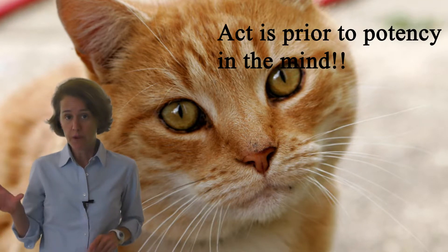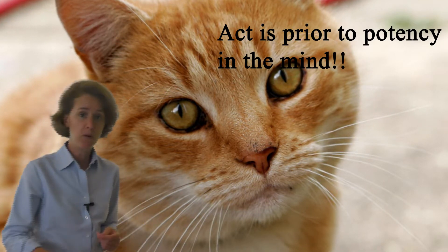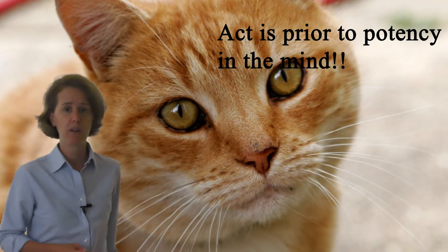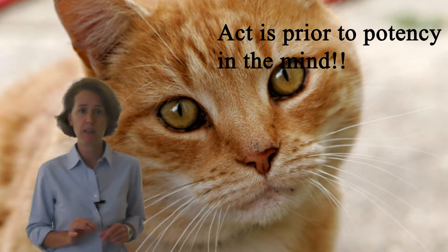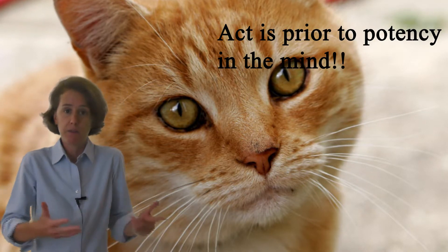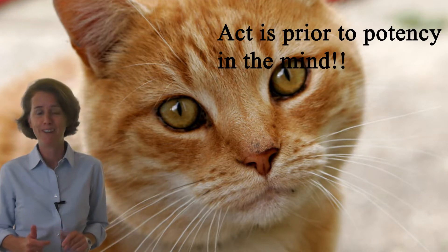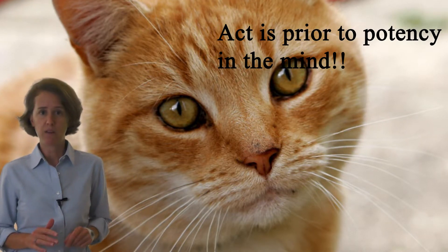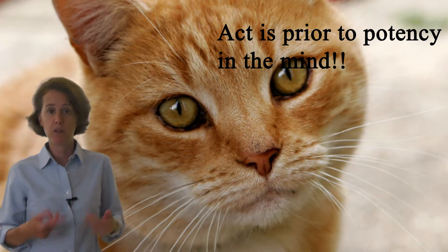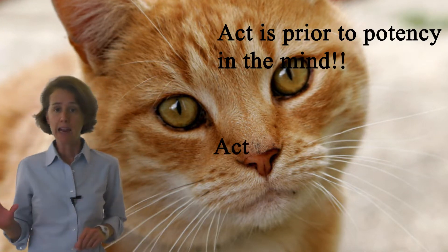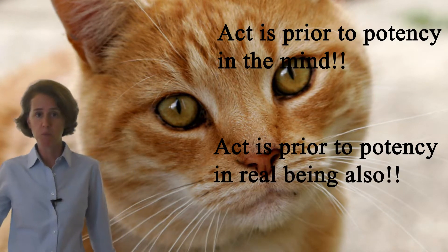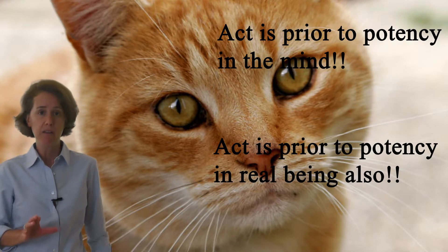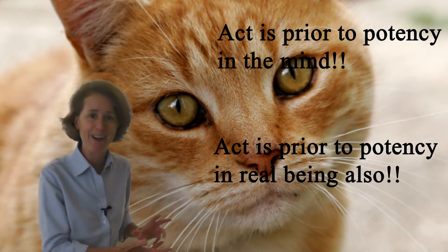Also, for the mother cat to produce a litter of kittens who have the potency to become full cats, she herself must possess that form of catness in actuality. She cannot give to her kittens what she herself does not have. The fancy Aristotle way of saying this is that the actuality of the efficient cause comes first. Act has to be prior to potency in real being. And the mother cat is more actualized as a cat than her kittens, who are only potential cats.